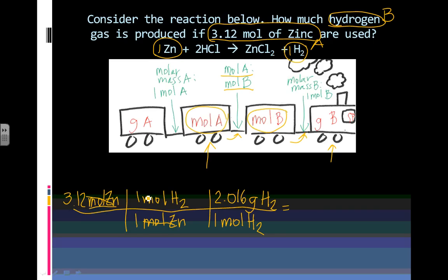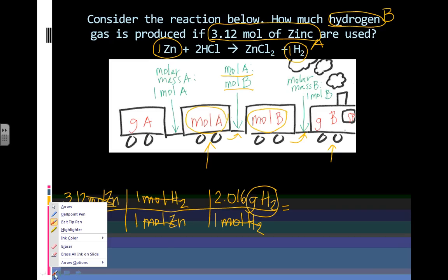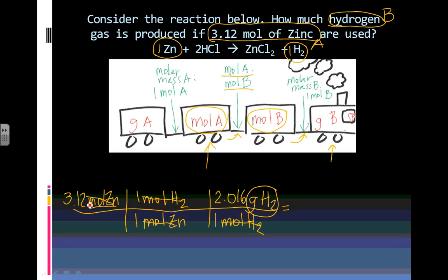These units cancel out. These units cancel out. And I'm only left with grams of hydrogen, which is exactly what the question asked me. So I know I did it correctly. Now, when we are putting this in the calculator, we're going to do 3.12 times 1 divided by 1, which of course is going to be 3.12 times 2.016 divided by 1. And the answer is going to be 6.29 grams of H2. This is the answer right here.